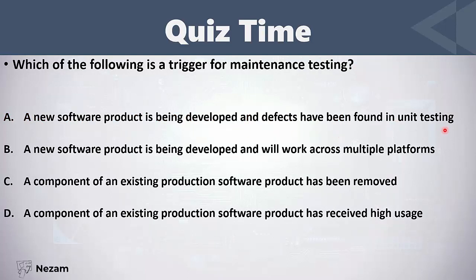'A new software product is being developed and defects have been found in unit testing' — here we are performing unit testing and still developing the software, so this is not maintenance. 'A new software product is being developed and will work across multiple platforms' — also still in development, so not maintenance testing. 'A component of an existing production software product has been removed' — this is maintenance testing because the system is in production and we removed a part of it, which is called retirement.